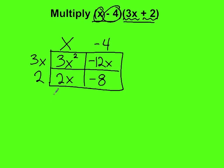Now we write down all the terms: 3x squared minus 12x. If there's a negative sign, we write a minus. If it's positive, we write a plus. So plus 2x minus 8.